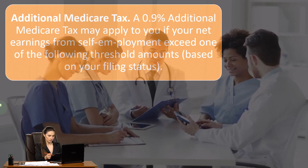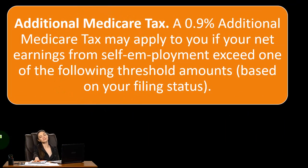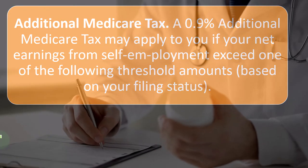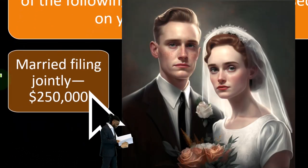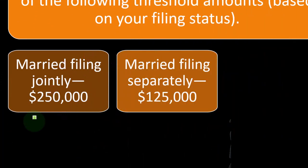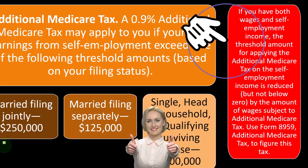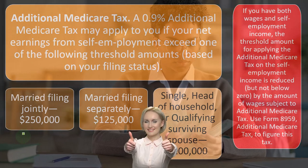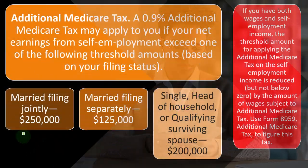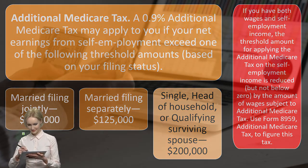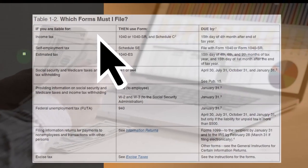Additional Medicare tax: a 0.9% additional Medicare tax applies if your net earnings from self-employment exceed certain thresholds based on filing status. Unlike Social Security which caps out, Medicare not only has no cap — the rate actually increases progressively. The thresholds are: $250,000 for married filing jointly, $125,000 for married filing separately, and $200,000 for single, head of household, or qualified surviving spouse. Use Form 8959 to calculate this additional Medicare tax.